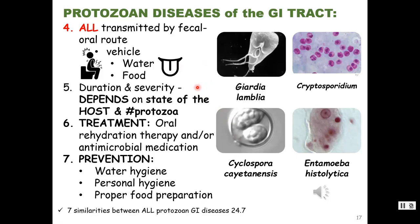The duration and severity depends on the state of the host — many of these diseases will be much more severe in immunocompromised hosts — and also on the number of protozoa ingested. Treatment is oral rehydration therapy, since diarrhea causes loss of excess fluids and electrolytes. Some of these are self-limiting diseases that will just run their course. Other times, antimicrobial medications will be prescribed — not antibiotics, but drugs targeted to the protozoan.